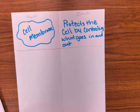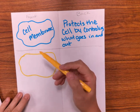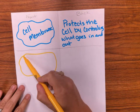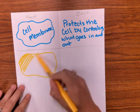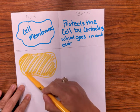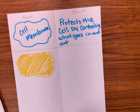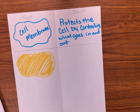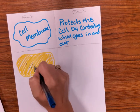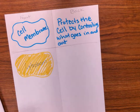The next organelle we're going to talk about is the cytoplasm. The cytoplasm is basically the filling inside the cell. If you color in the cell yellow, the yellow part would be the cytoplasm — it's the background, like the air in a room or the floor.